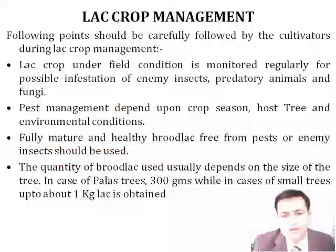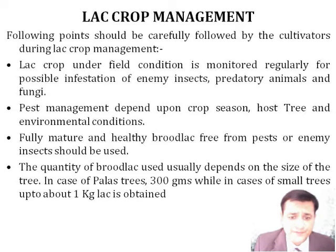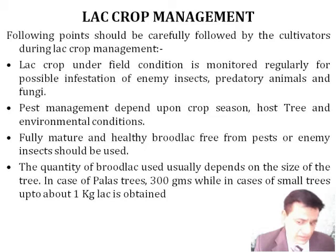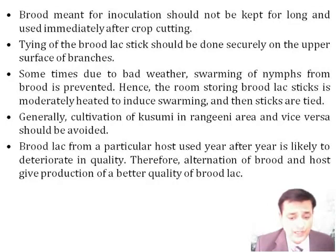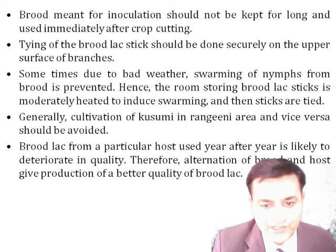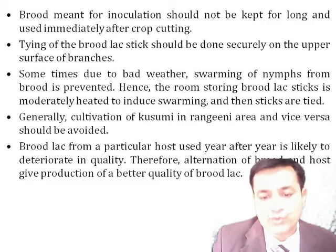For lac crop management, lac crop under field cultivation is monitored regularly for proper checking of infestation by enemy insects, predatory animals, fungus, etc. Pest management should be done from time to time depending on environmental conditions. Fully mature and healthy brood lac should be free from pests. The quantity of brood lac used depends on the size of the tree — for example, in the case of palash trees, 300 grams is used, and small trees can yield about one kilogram of lac. Tying of the brood lac stick should be done securely on the upper surface of branches. Sometimes, due to bad weather, swarming of nymphs from brood is prevented, so room storage facilities should be available to moderately heat brood lac sticks to initiate swarming.